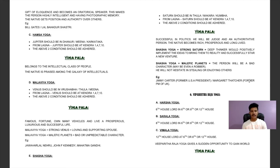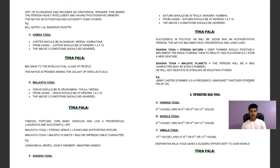Malavya Yoga: Venus should be in Taurus, Libra, or Pisces, and Venus should be in a Kendra (1st, 4th, 7th, or 10th) from the Lagna — both conditions must be met. Yoga phala: famous, fortunate, owns many vehicles, lives a luxurious and successful life. Malavya Yoga plus strong Venus equals loving and supportive spouse; Malavya Yoga plus malefic planets equals bad or unpredictable character. Examples: Jawaharlal Nehru, John F. Kennedy, Mark Zuckerberg. Karma matters.